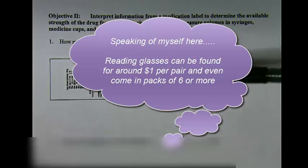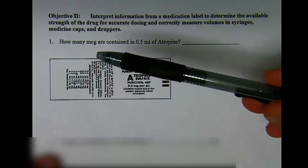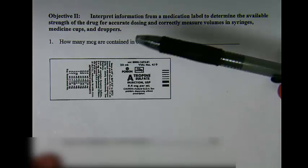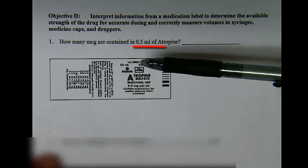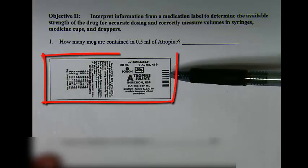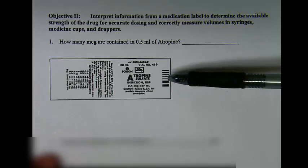If I look at question one, it's asking me to evaluate how many micrograms are contained in 0.5 milliliters of atropine. So in order to figure this out, I have to look at my label and I have to know the pieces on my label in order to extract the information I need to work the problem.